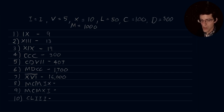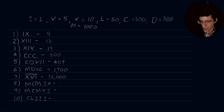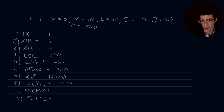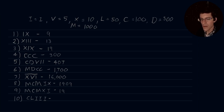Number eight, MCMIX: we have our 1,000, then C in front of M, so we take 100 away from 1,000, giving us 900. So we have 1,900, and then IX — that is going to be 9. Take 1 away from our greater value. So this is 1,909. Number nine has the same thousands and hundreds place, but we look at XI: the greater value precedes the lesser value, meaning we add 1 to 10. So 1,911.